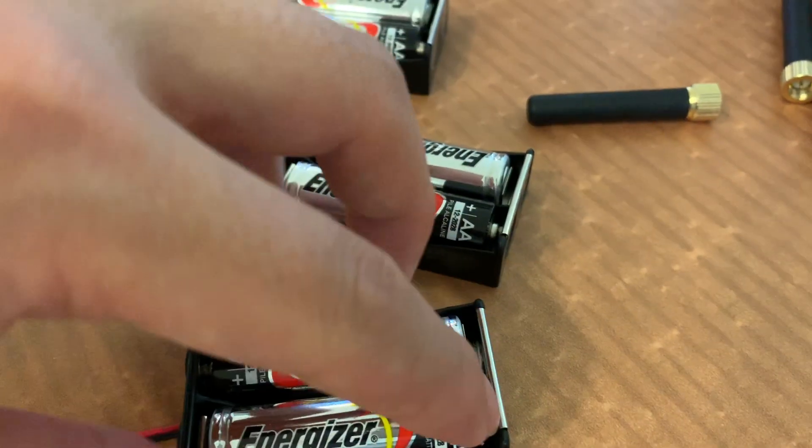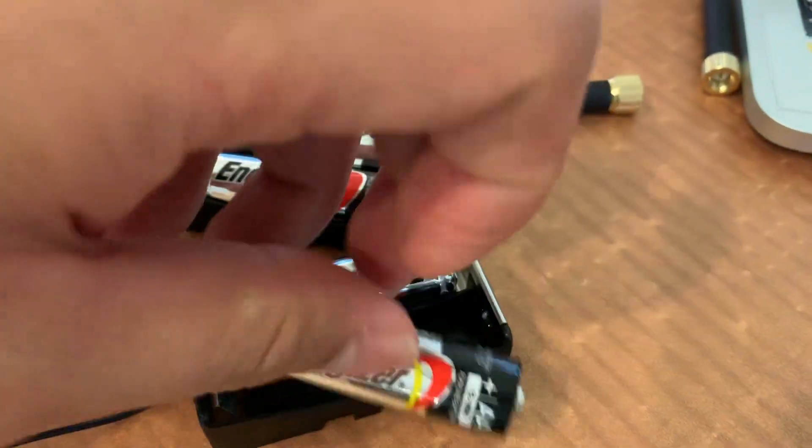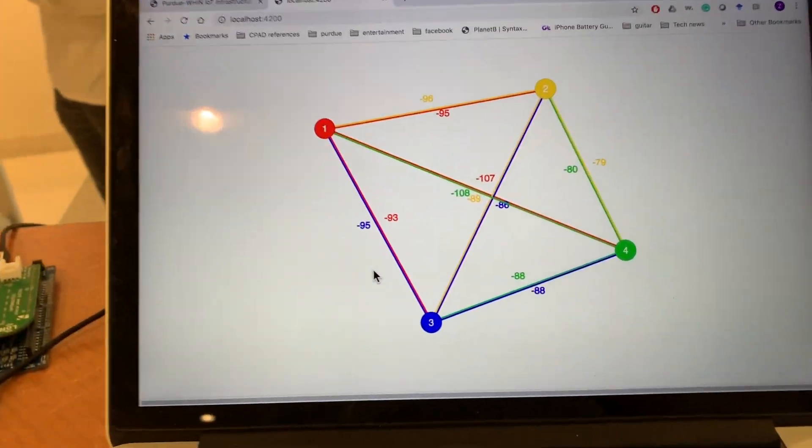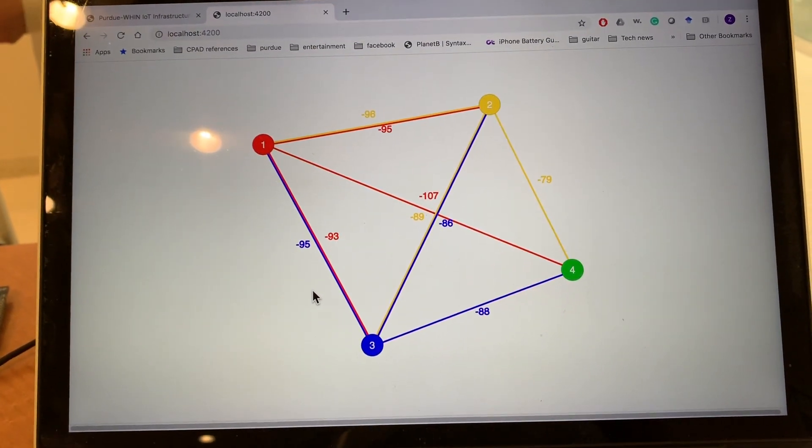Then, the receiver would not receive routing information from node 4 anymore. After a certain timeout, the links from node 4 will disappear.